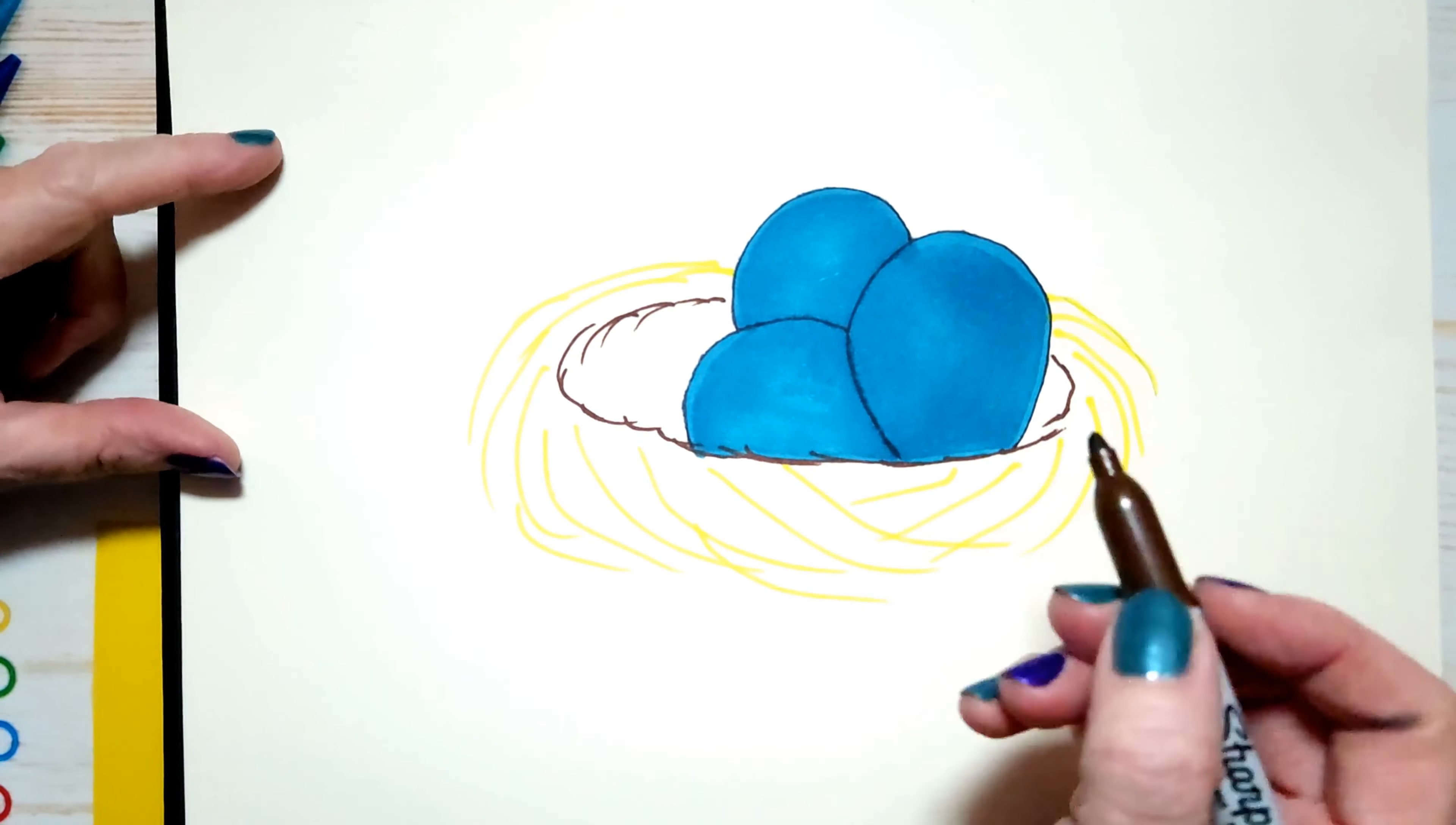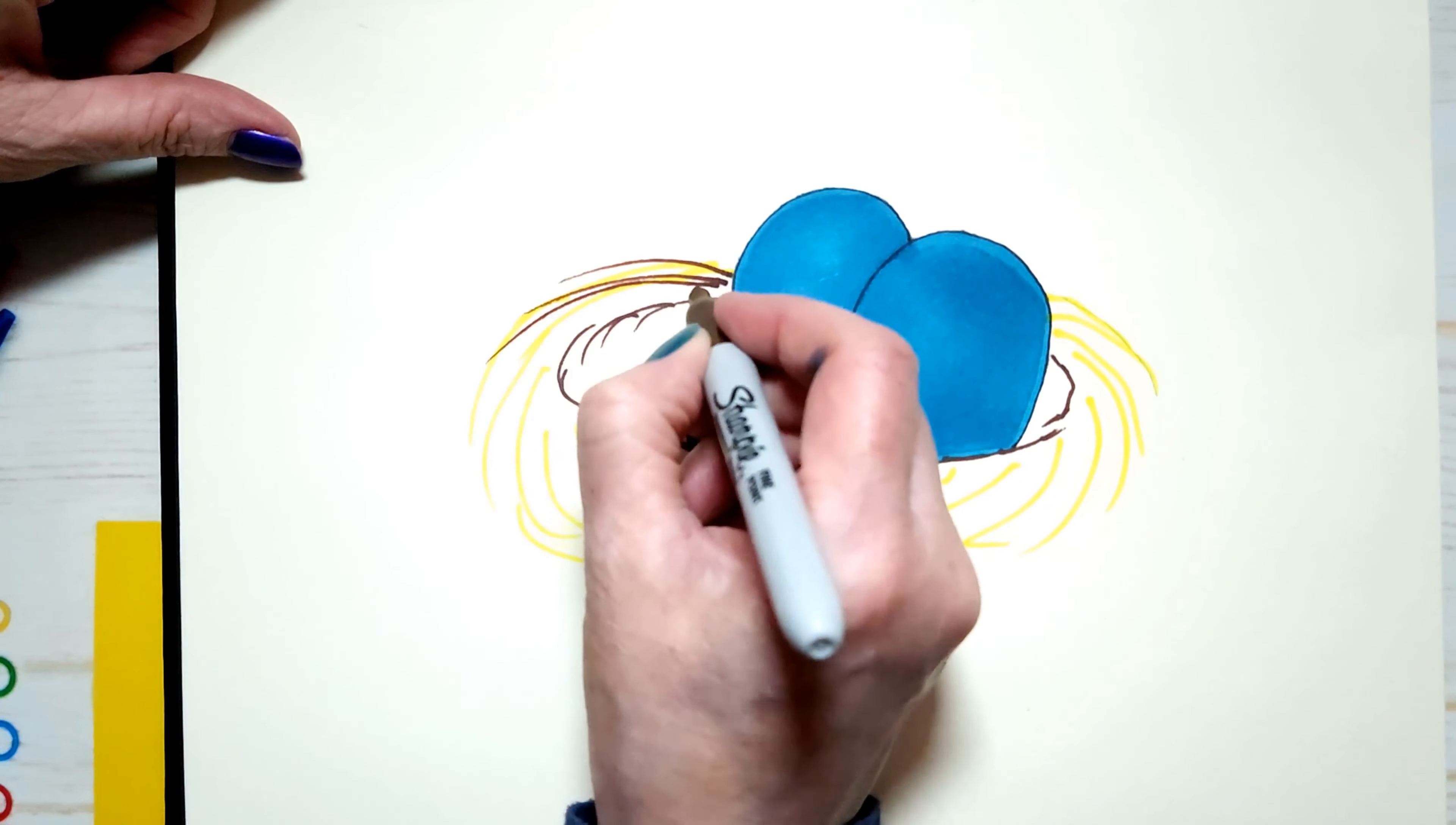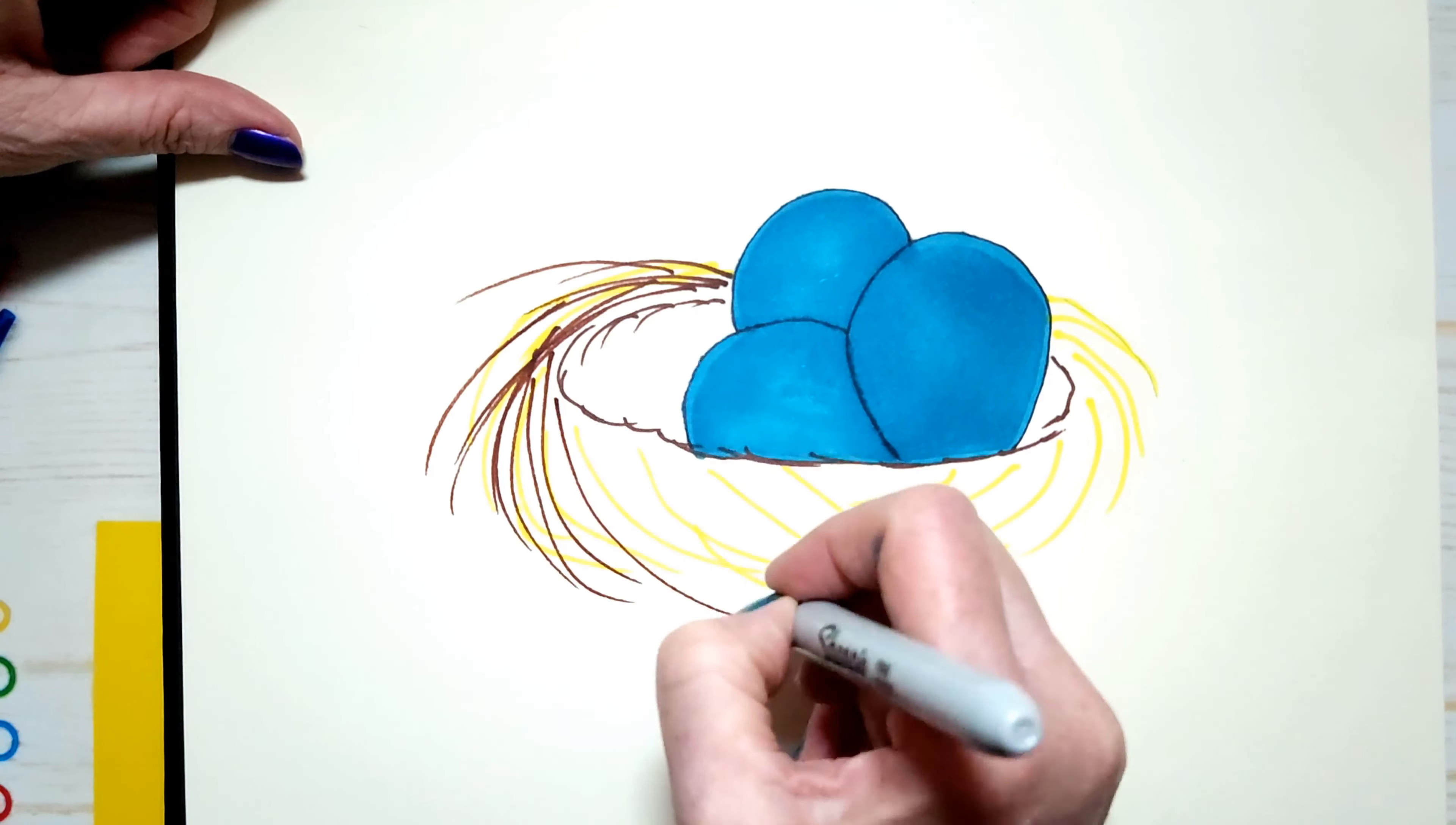Now I've got my brown. And the way we make a nest is we just do this. And it's, I wouldn't say it's messy.